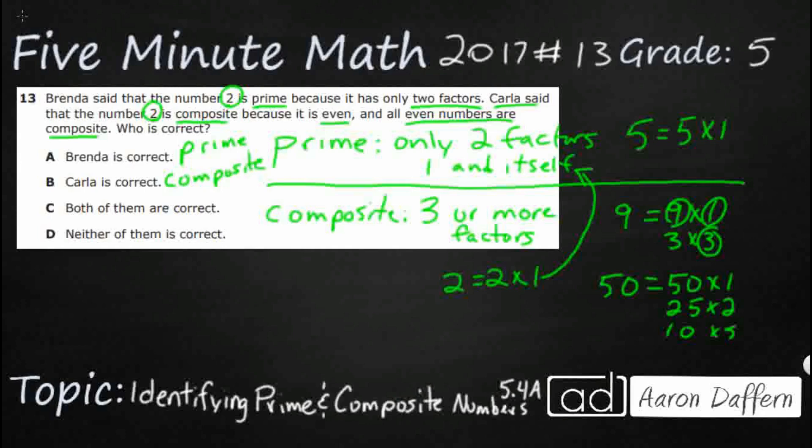But 2 is even, and all even numbers are composite. Well, are all even numbers composite? Well, let's see. I've got 4, 6, 8, let's just do 10, and let's just do 12. Let's see what we can do for these.